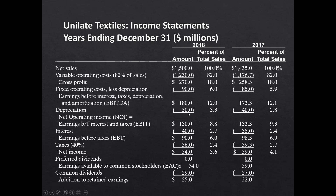Depreciation was $50 million in 2018 and $40 million in 2017, giving EBIT — earnings before interest and taxes — of $130 million in 2018 versus $133.3 million in 2017. This is where you can start seeing why the stock price came down: EBIT is declining both in total and as a percentage of total sales. Interest expense was $40 million in 2018 versus $35 million in 2017, leaving earnings before taxes of $90 million versus $98.3 million.